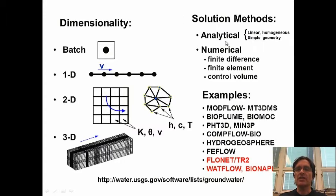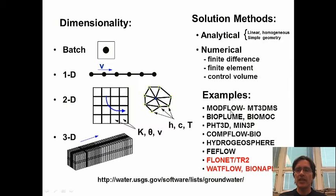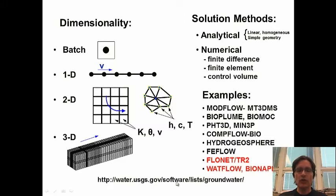Various solution methods are possible. Analytical methods are only applicable for linear, homogeneous systems with simple geometry. For more complex geometry we need numerical methods, and there are basically three commonly used: finite difference, finite element, and control volume. Here's a list of example models — MODFLOW is one of the most common flow models, coupled with various transport codes. For this talk I'll be showing examples with in-house codes: FlowNet, TR2, WatFlow, and BioNAPL. Several of these codes are freeware available from the USGS website.